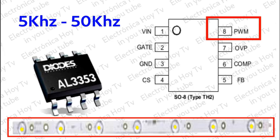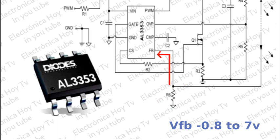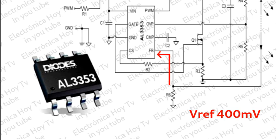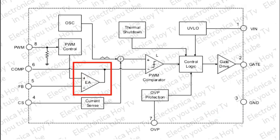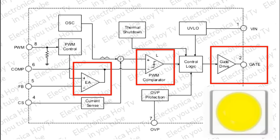La corriente del LED se detecta a través de una resistencia de detección de corriente externa. El voltaje a través de la resistencia de detección se compara con una referencia de nivel de 400 milivoltios, y la señal de error se amplifica para controlar el ancho de pulso del switch de conmutación, con lo que se regula la potencia que fluye al LED.